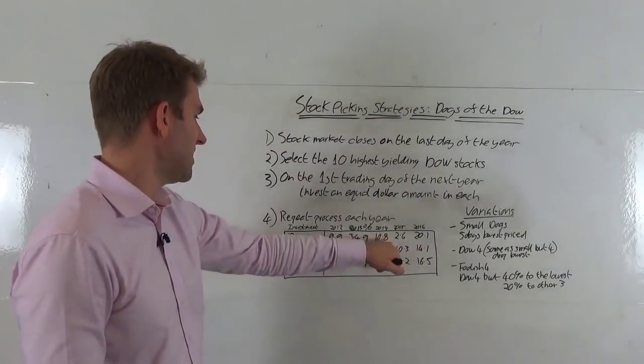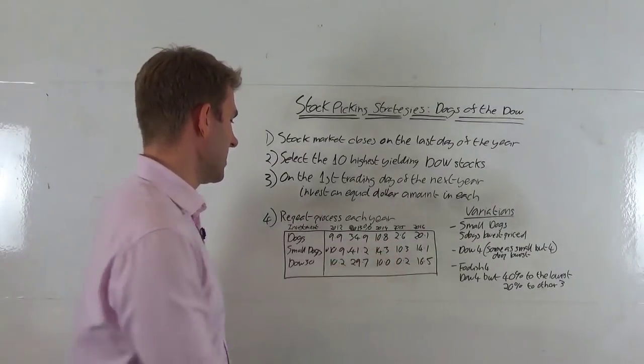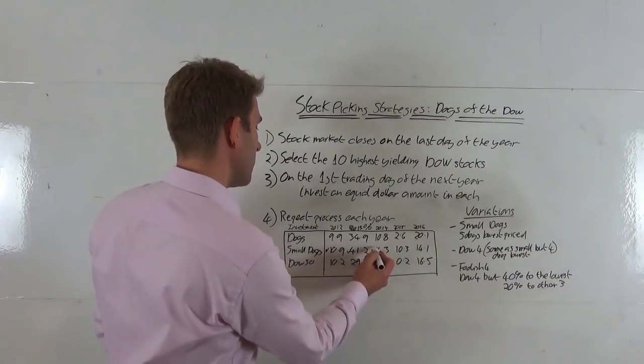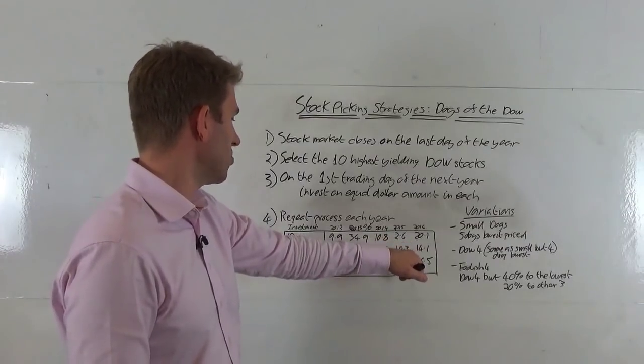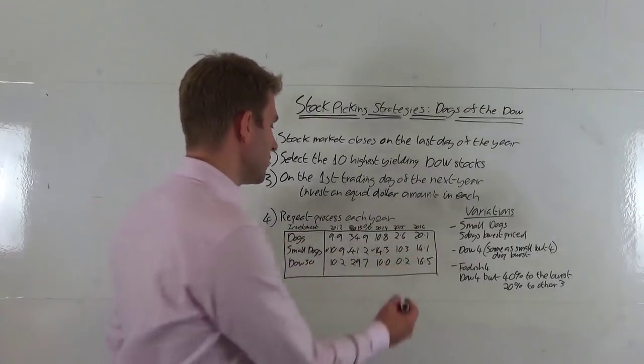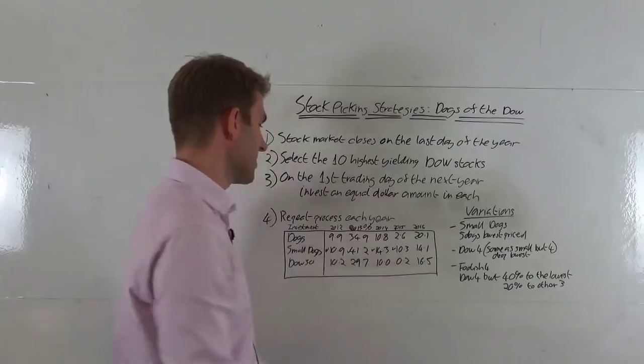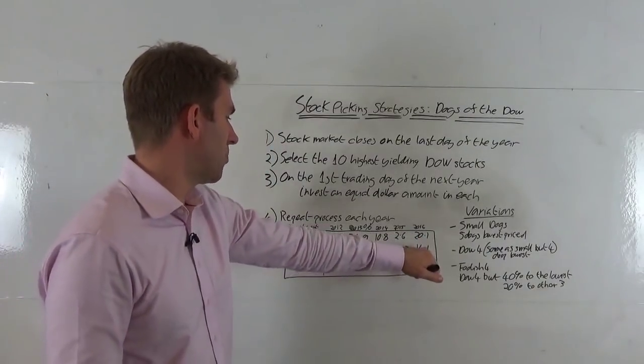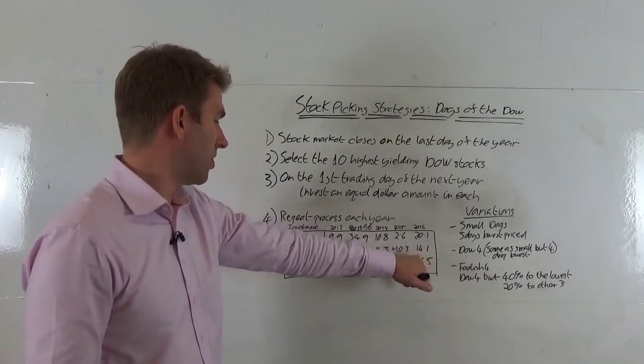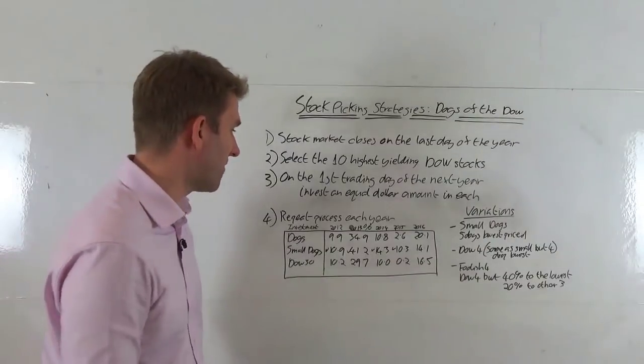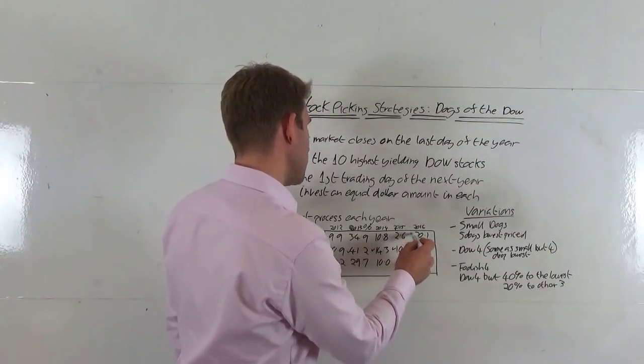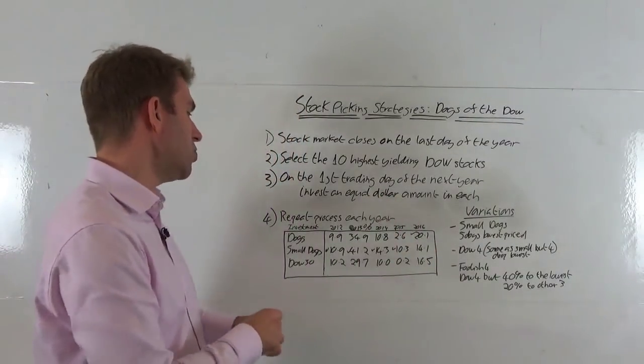Then 2014, 10.8, 14.3, and 10 on the Dow. So another one for the small dogs. 2015, dogs 2.6, small dogs 10.3, Dow 0.2, another one for the small dogs. And then we've got 2016, dogs 20.1, small dogs 14.1, Dow 30 16.5. So winner for the dogs, and actually small dogs came last.